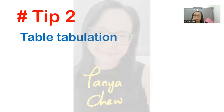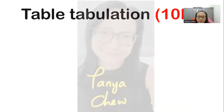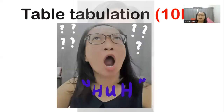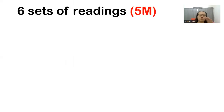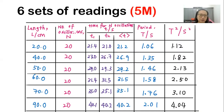Tip number 2: table tabulation. This is one of the very important parts in your Physics paper 3, question number 1, because table tabulation can earn you 10 marks — sometimes 11 marks depending on the question. First, whenever you have six sets of readings — because you are asked to repeat the experiment for six sets in order to plot the graph — they will give you five marks for that. I have one, two, three, four, five, six readings, so automatically I will gain those five marks.